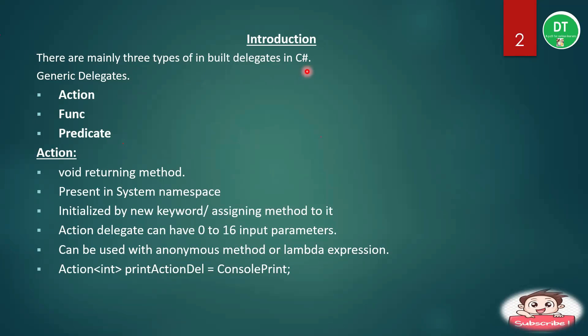There are three types of inbuilt delegates and all three are generic delegates. Generic delegates can take any type of data — any data type — as a parameter. There is no already-defined constraint that a particular delegate will only take integer or string. They are generic and can take any type of parameter. The three generic delegates are Action, Func, and Predicate.